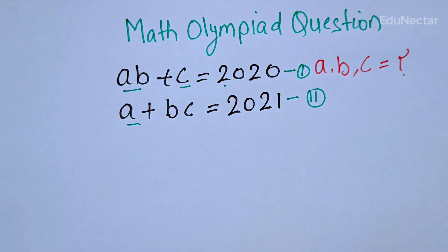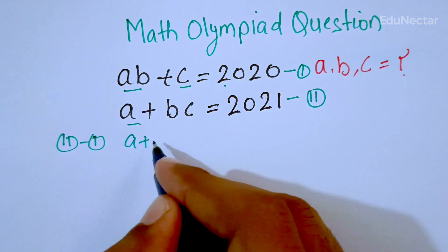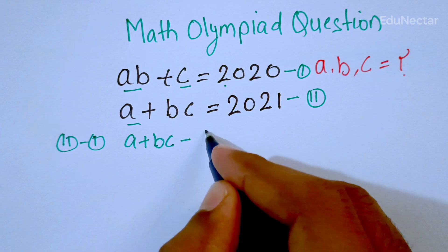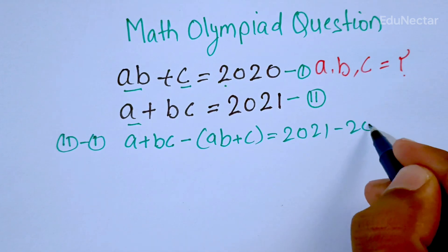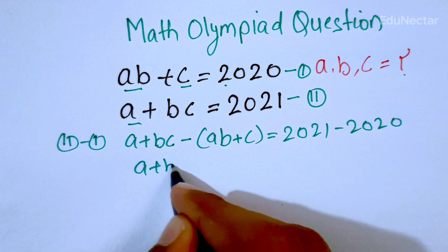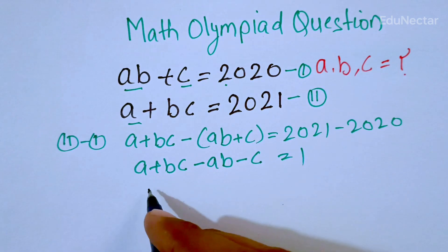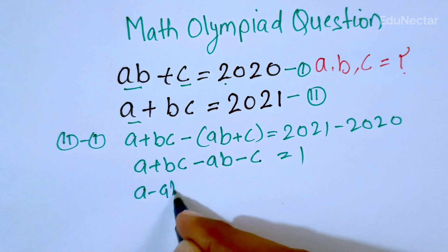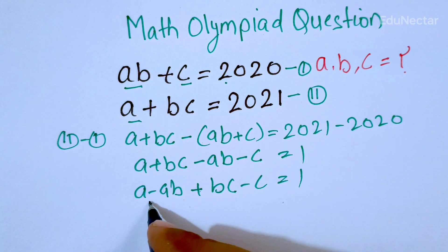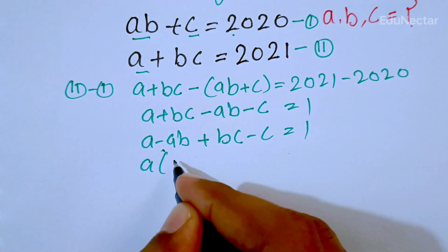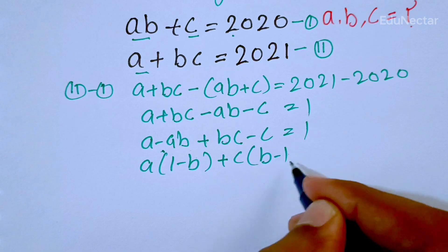I am going to subtract equation number one from equation number two. So a plus bc minus ab plus c is equal to 2021 minus 2020. The terms become: a minus ab plus bc minus c is equal to one. a is common here, we can factor it out: a(1 minus b), and c is common here, we can factor out c: c(b minus 1) is equal to one.